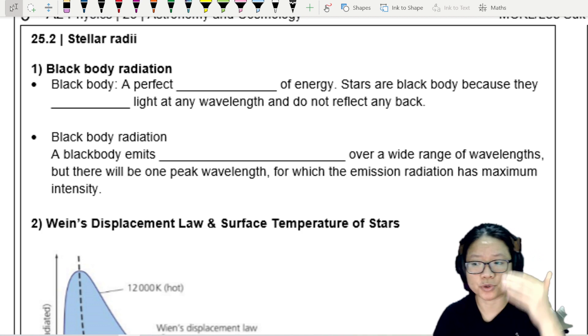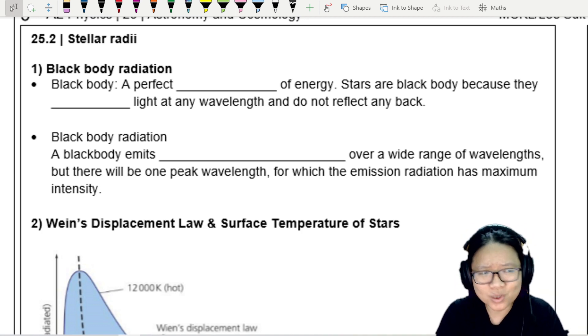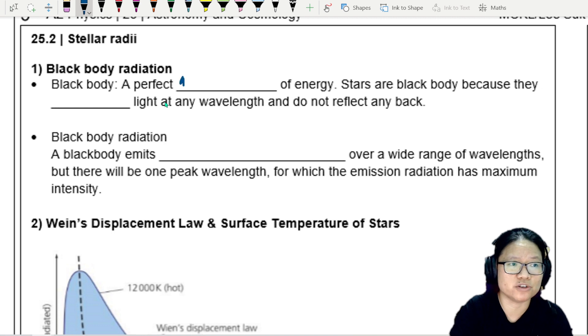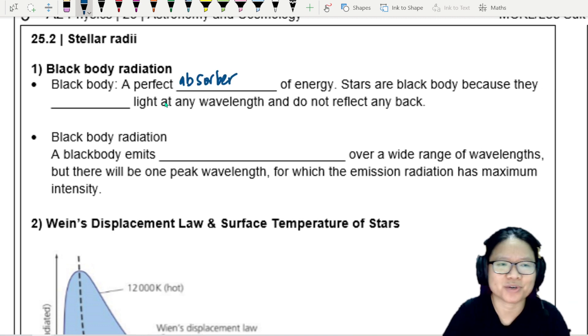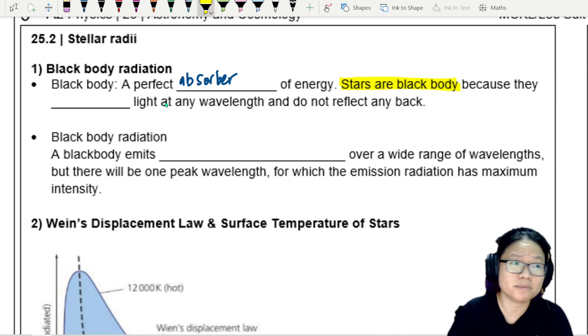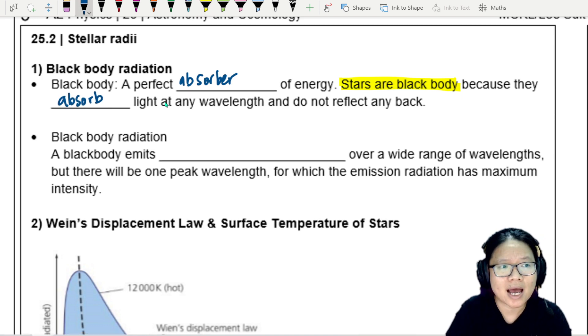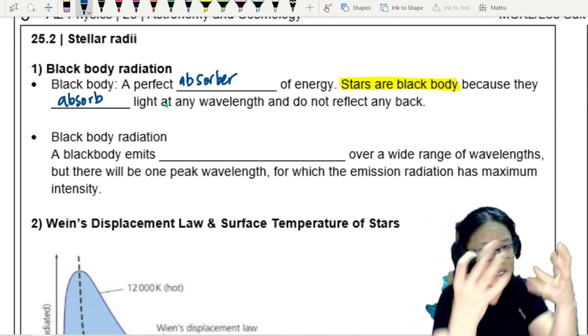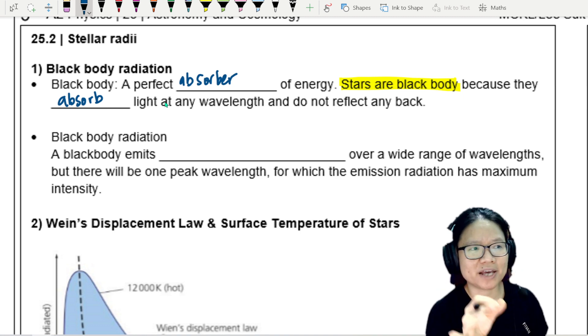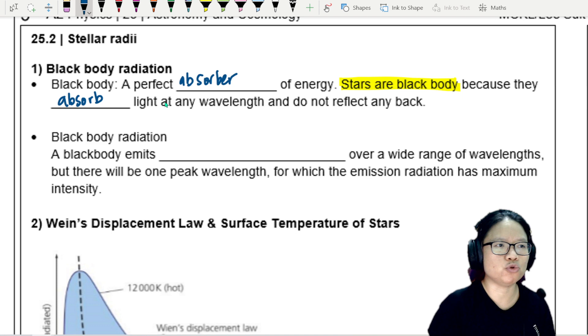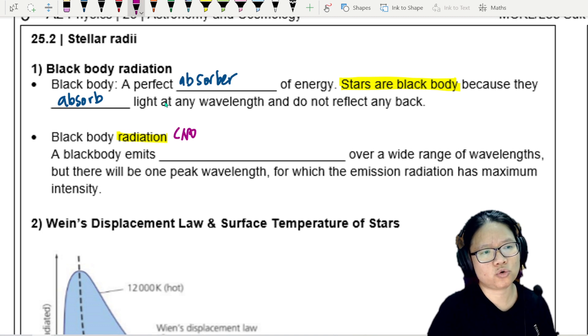Before we can start studying the relationship between wavelength and temperature, we need to understand what is black body and what's black body radiation. So we call black body a perfect absorber of energy. That's why it's black. Stars are black body. So all the things that we're studying in this entire chapter, which is basically astronomy and cosmology, it's about stars. And stars are black body because they absorb light at any wavelength and do not reflect any light. So it just takes in all the light.